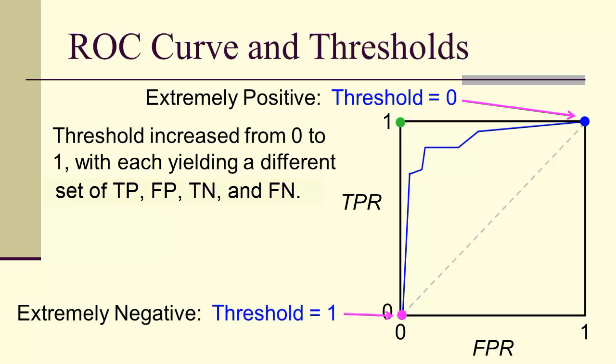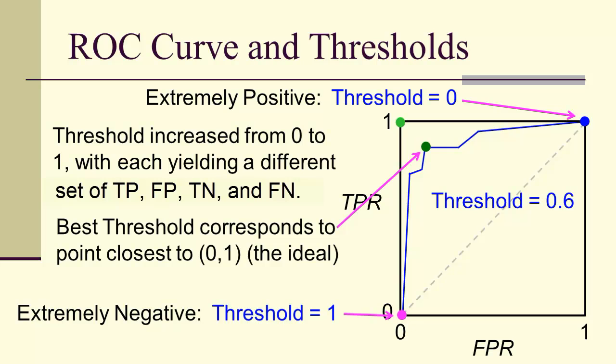And once we've done that, then we can choose the point closest to our ideal, up there in the upper left corner, and that will be the best threshold, the one that corresponds to the ideal.